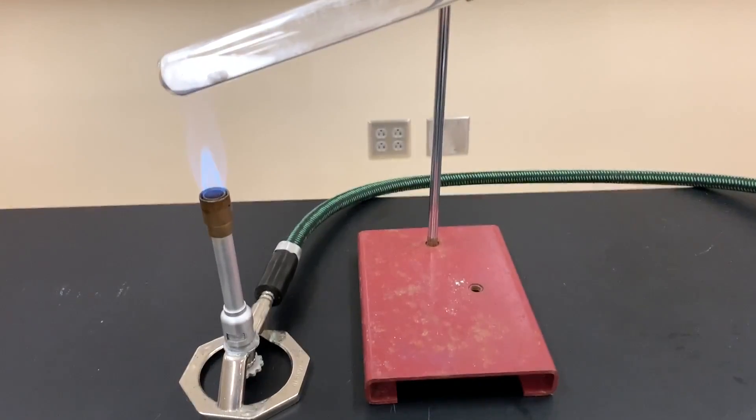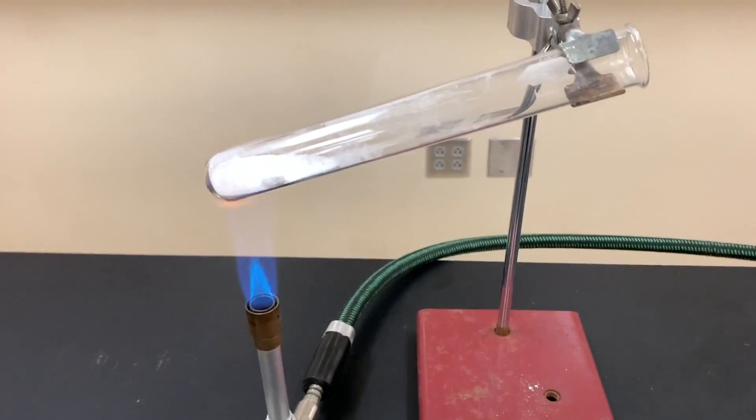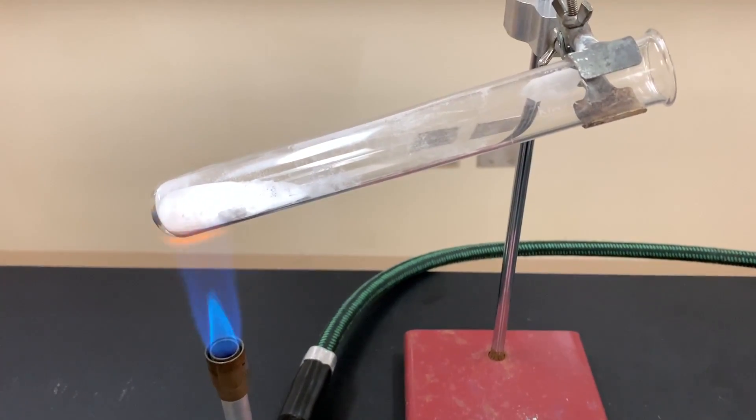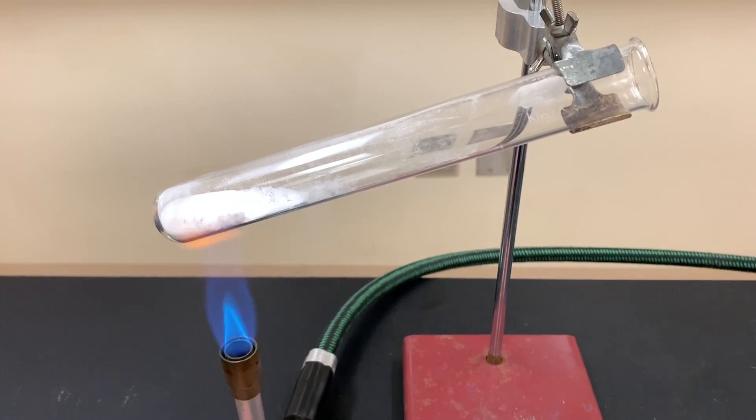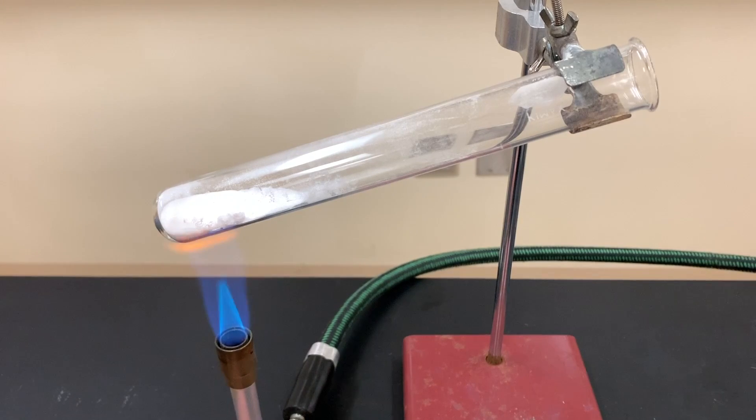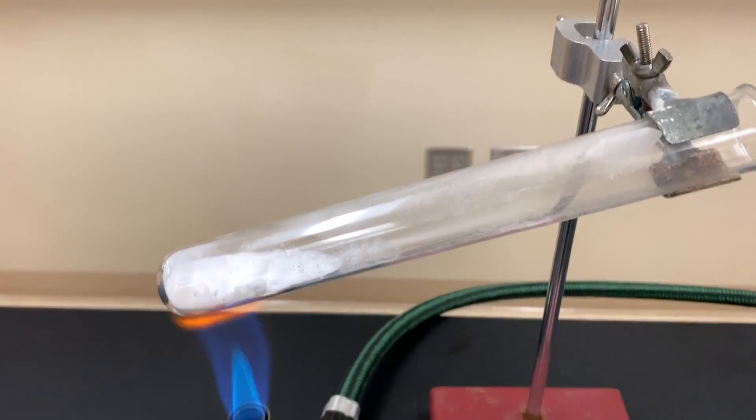I'm going to move this up so that we can actually see the test tube and move it a little bit closer because we're looking for evidence of those three products. When sodium bicarbonate decomposes you do not get a color change so it's going to make this a little more complicated. So I'm going to try to get as close as I can to the chemical change so that you can see what's going on in that test tube.